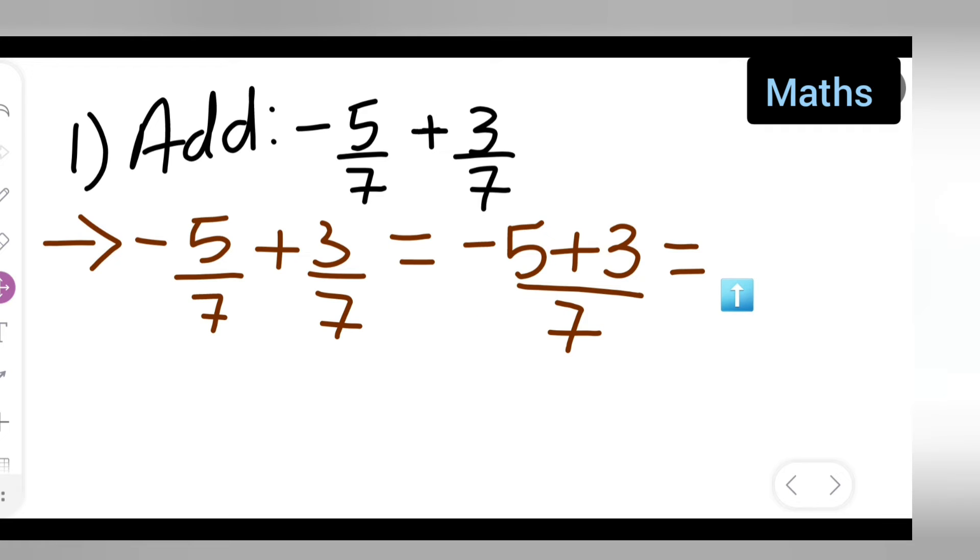The sign of the bigger number, put it right now. So 5 minus 3 will give you 2. Your answer will be negative 2 upon 7.